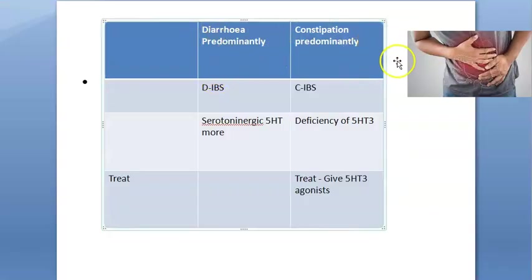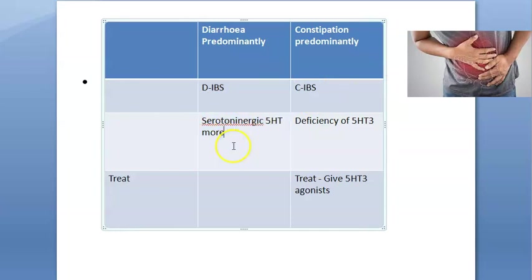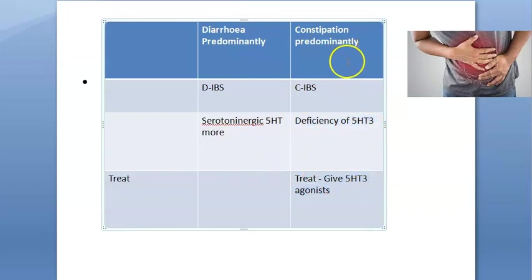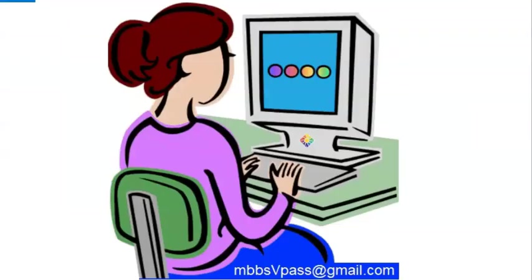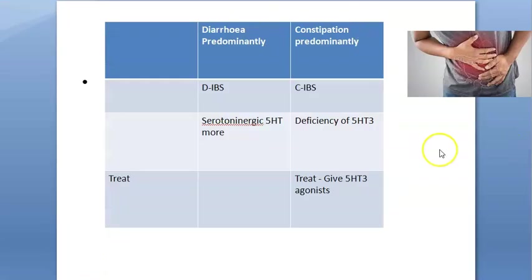Patients can be classified as D-IBS (diarrhea-predominant IBS) or C-IBS (constipation-predominant IBS). In D-IBS, serotonin (5-HT) is elevated. In C-IBS, there is deficiency of 5-HT3, which leads to constipation — so giving 5-HT3 agonists to these patients may resolve the constipation.